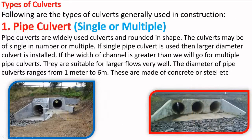Types of culverts. The following are the types of culverts generally used in construction. First, pipe culverts — single or multiple. Pipe culverts are widely used and rounded in shape. The culvert may be single or multiple in number. If a single pipe culvert is used, then a larger diameter culvert is installed. If the width of the channel is greater, then we go for multiple pipe culverts. They are suitable for larger flows. The diameter of pipe culverts ranges from 1 meter to 6 meters. These are made of concrete or steel.